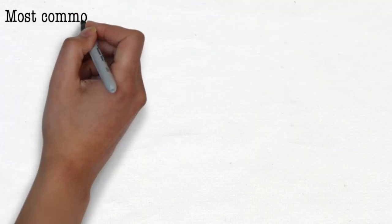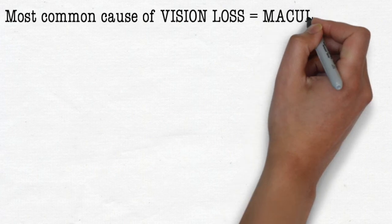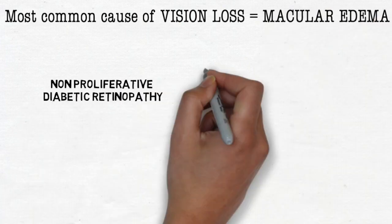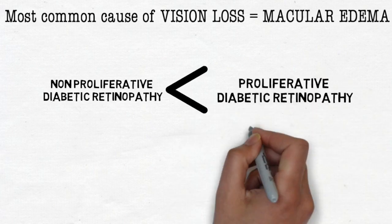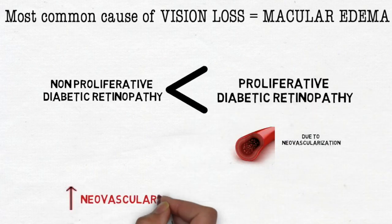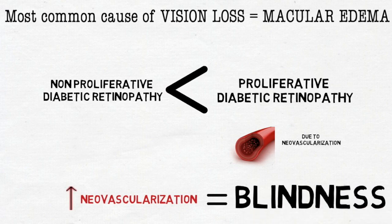The most common cause of vision loss in this pathology is macular edema. It can happen in non-proliferative retinopathy but is more common in proliferative, thanks to the newly formed leaky vessels. The more neovascularization that occurs, the faster you're going to develop blindness.